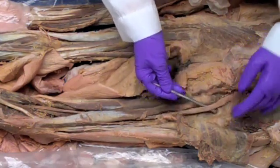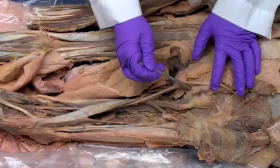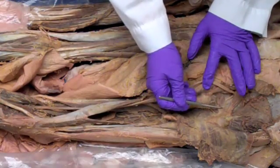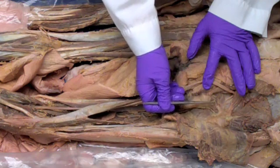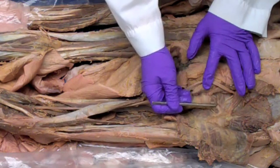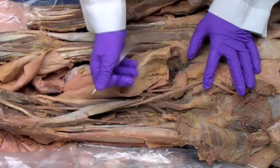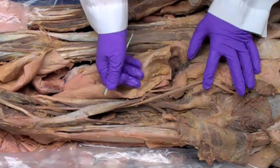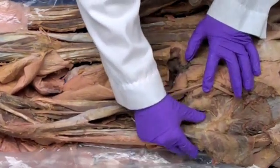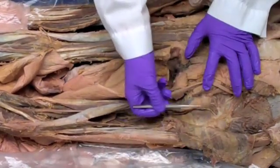When we move the sciatic nerve out of the way, we can see, like it is nicely on the model, the gemellus superior, the gemellus inferior, and in between, the obturator internus going on. Down in here, we have the quadratus femoris.